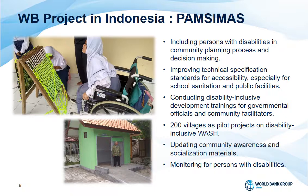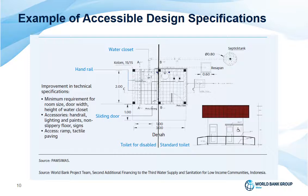Here is an example: the National Rural Water Supply and Sanitation Project in Indonesia, PAMSIMAS. It's a large-scale operation that operates in 70% of the total districts and municipalities in Indonesia, aiming to improve access to water supply and sanitation services in 27,000 villages by 2020, and has already provided benefits to over 10 million people. In 2016, PAMSIMAS provided master training to 55 stakeholders at national and provincial levels on disability inclusive development, then mainstreamed training for 4,000 facilitators, and piloted universal design in 50 villages in 2017. On this slide, you can see an example of accessible design — a toilet for disabled persons on the left and a standard toilet on the right.